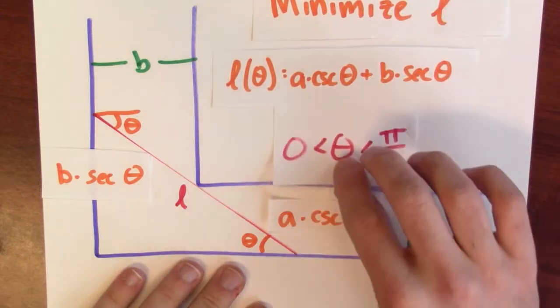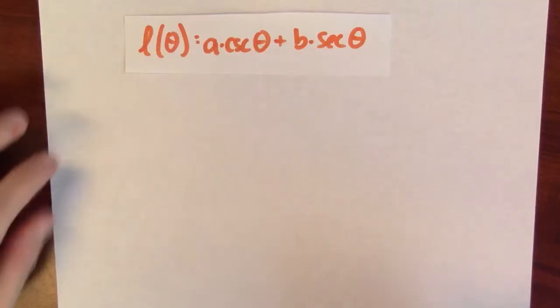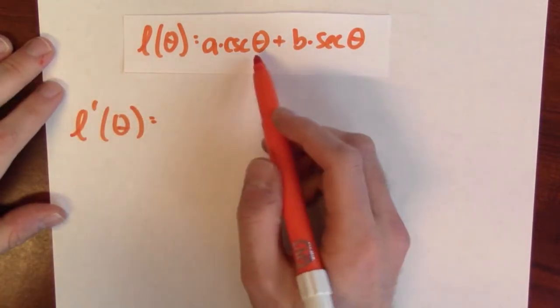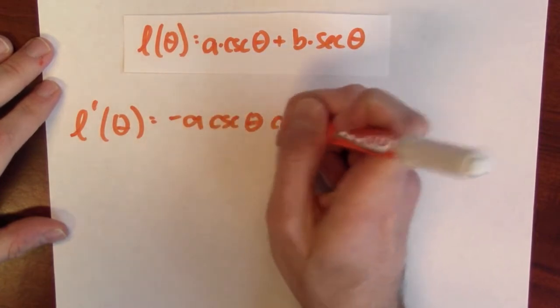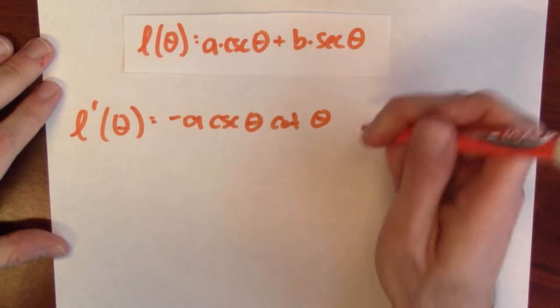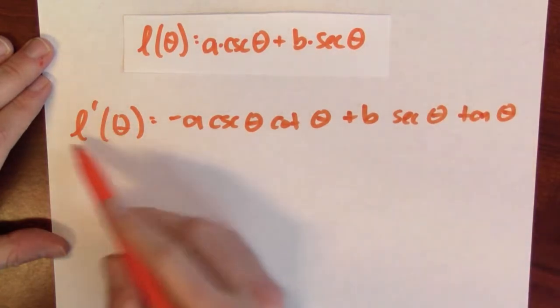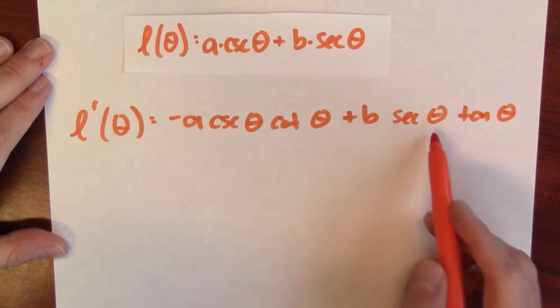The constraint in this problem is that theta only needs to be between 0 and pi over 2 in order to touch these two walls and the corner. Now we've got a function of a single variable, so we can apply calculus. I'm going to differentiate this function — the derivative of L with respect to theta. The derivative of cosecant is minus cosecant theta cotangent theta, and the derivative of secant is secant theta tangent theta. So dL/dθ = −A cosecant theta cotangent theta + B secant theta tangent theta.